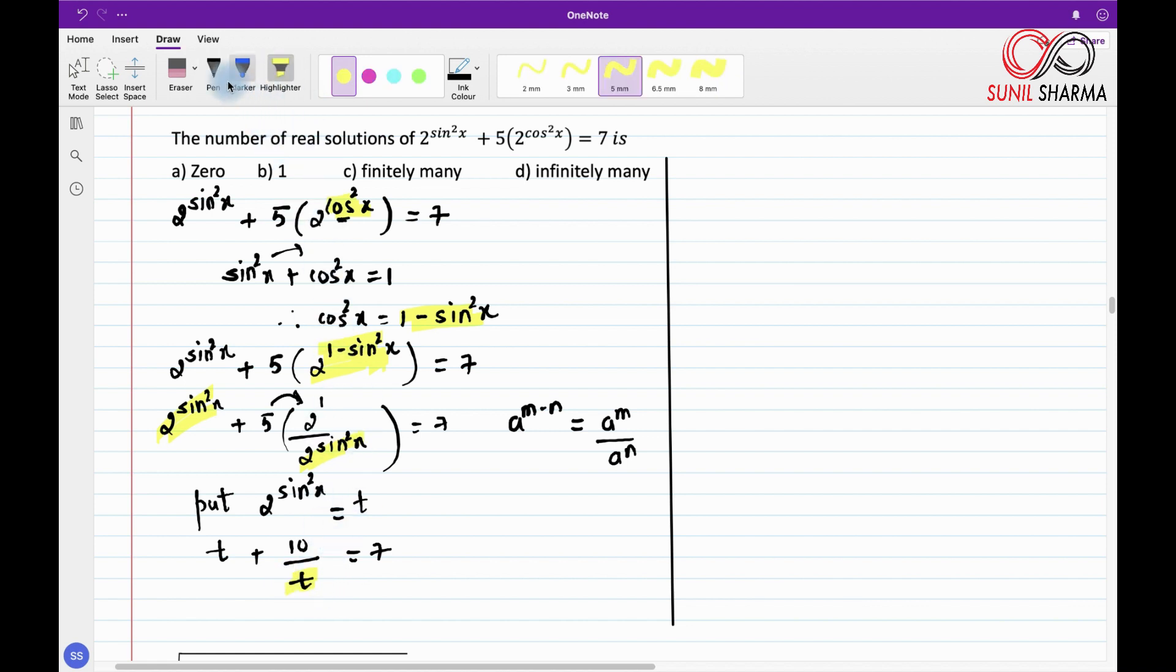I don't want this t in the denominator, so what I need to do is multiply throughout by t. So what do we get? t·t will give us t². When I multiply t to the second term, denominator t will get cancelled and you get 10, and then you get 7t. Quickly we can write this into a standard form: t² - 7t + 10 = 0. Here we get a quadratic equation.